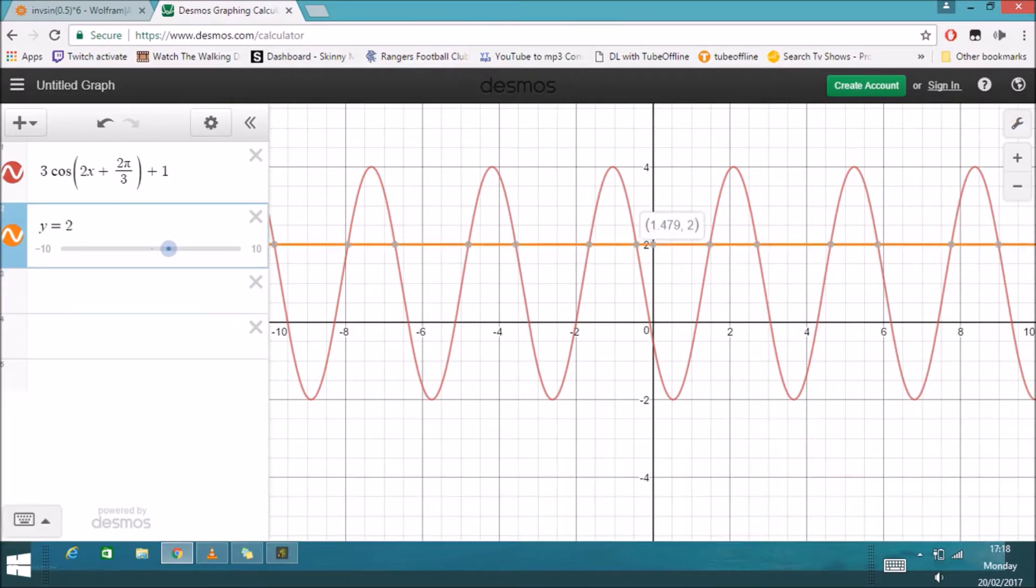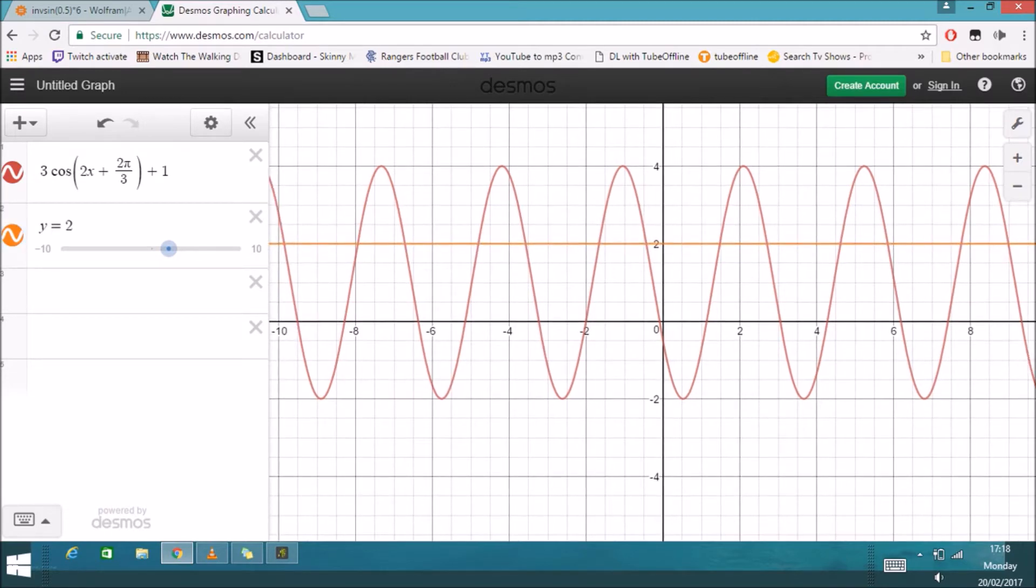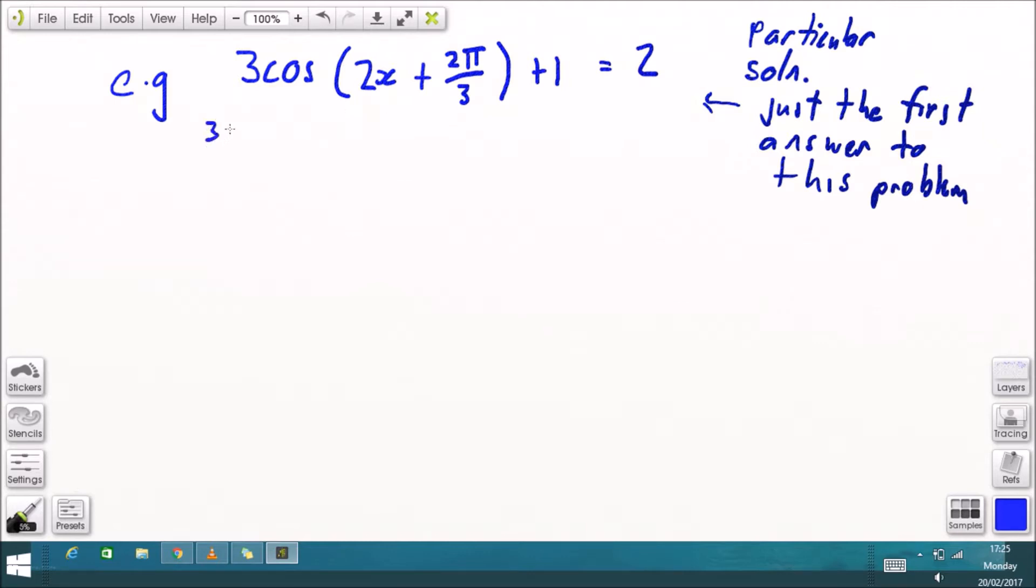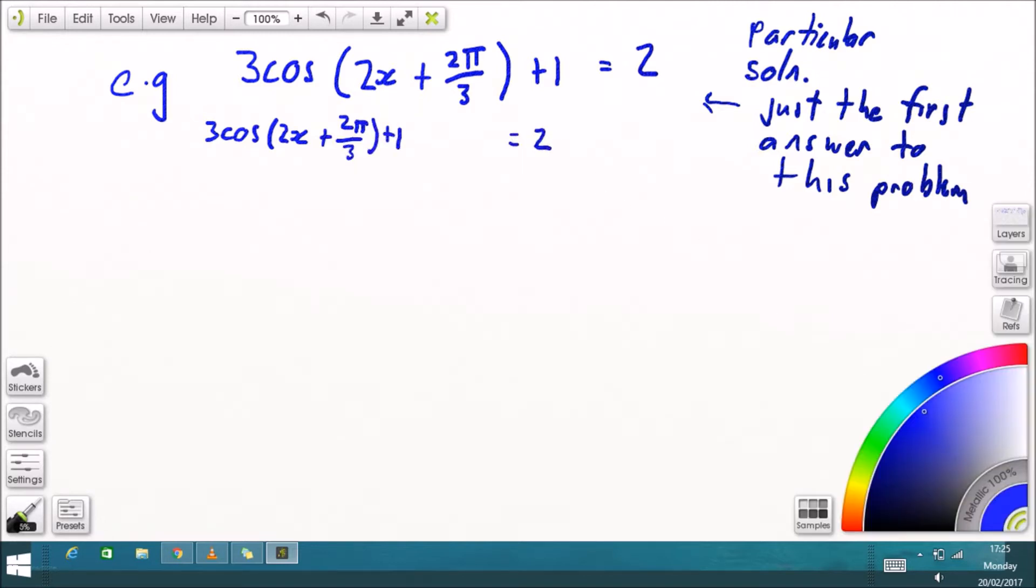And here we go, we can use Desmos or GeoGebra to plot that. So we've got an example there. When does it first equal two meters? Well, it equals it when x, whatever x is, it might be time in hours or days or months, it equals it when it equals 1 point something. So we're just going to solve this now to see if we get the right sort of answer.